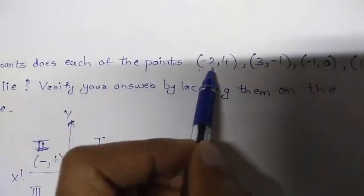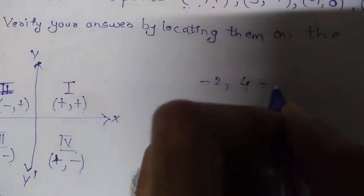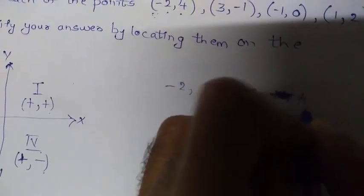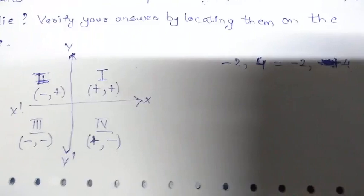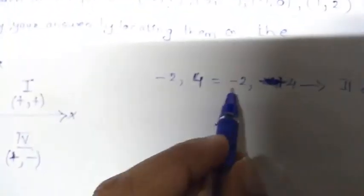For (−2, 4) — written as minus 2, plus 4 — the signs are minus and plus. In which quadrant do minus and plus signs appear? The 2nd quadrant. So this point lies in the 2nd quadrant. Minus 2 and plus 4: minus and plus signs are present in the 2nd quadrant. Hence, (−2, 4) lies in the 2nd quadrant.